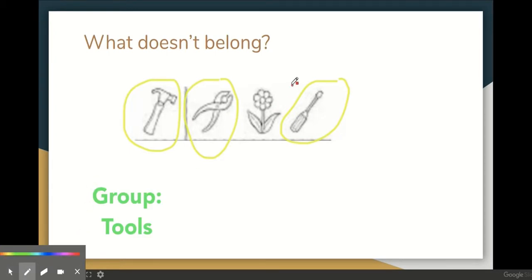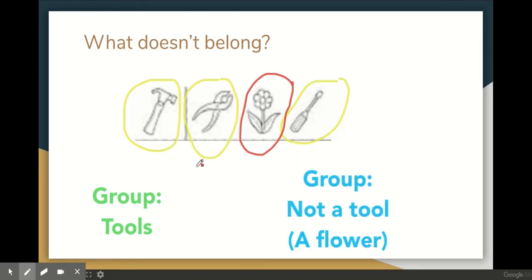Is the flower a tool? No, it is not a tool. A flower, this flower's a living thing. So that belongs in its own group. Here we have two groups. We have the tool group and we have the flower group. But the flower does not belong with the tools.